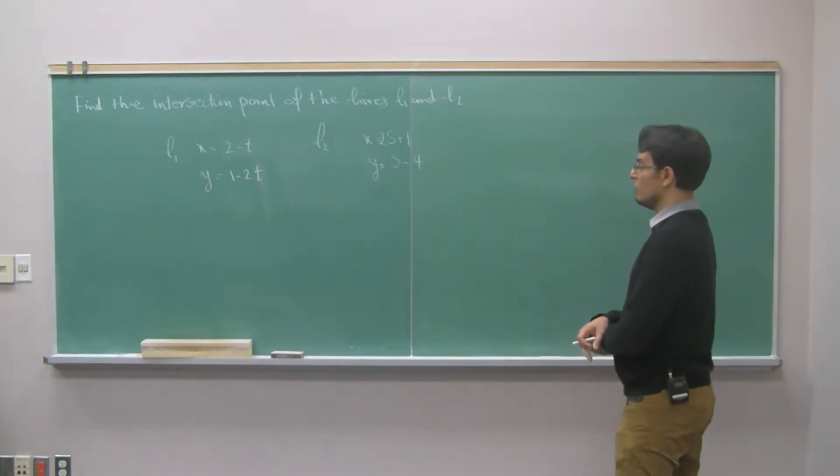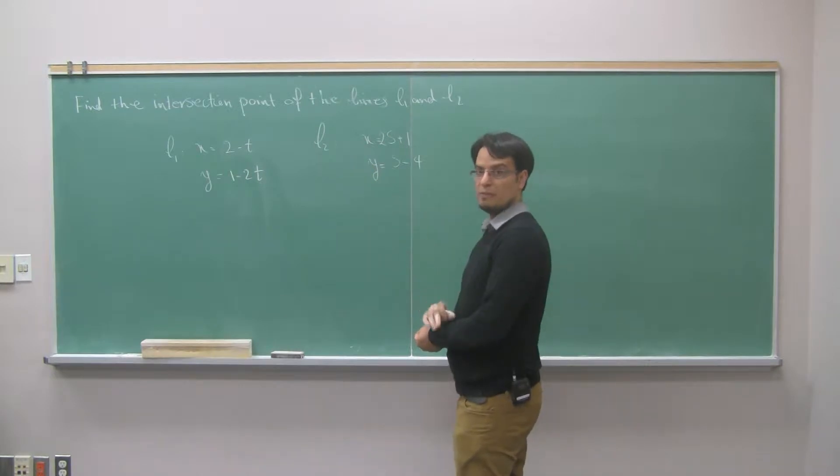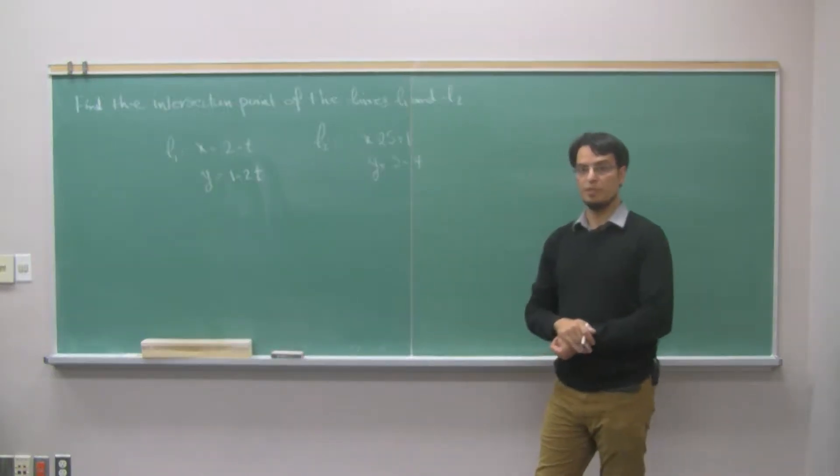So the example has two lines, L1 with parametric equations, the first one in terms of parameter t, and the second one in terms of parameter s.